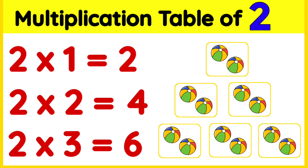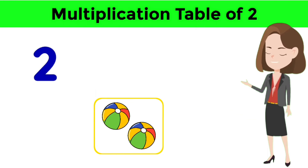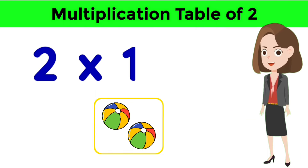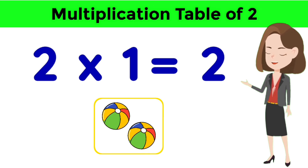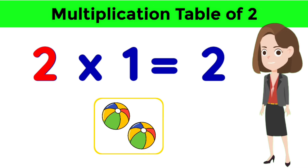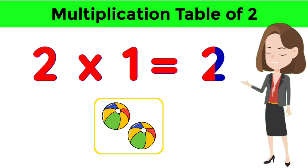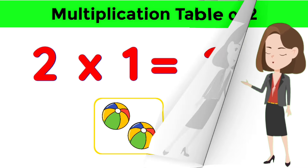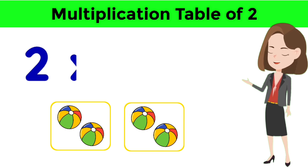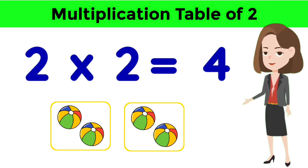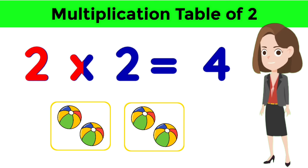Multiplication table of two — come, let's learn the multiplication table of two. Two ones are two. Two twos are four.